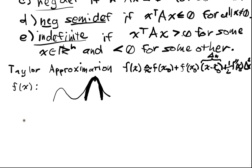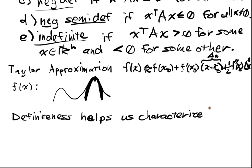The whole point of definiteness is to characterize second order local behavior of a function. Definiteness helps us characterize second order, that is quadratic approximations, local behavior of a function.